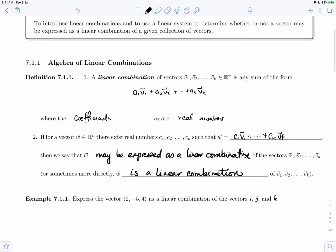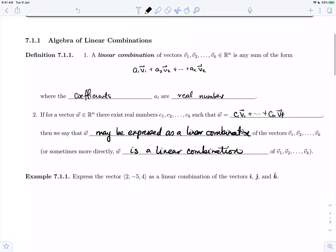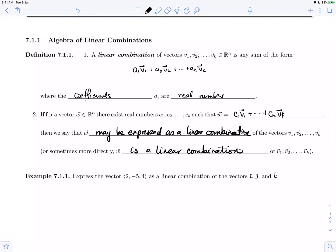So let's look next at Example 7.1.1. We're asked to express this vector (2, -5, 4) as a linear combination of the standard unit vectors i-hat, j-hat, and k-hat.